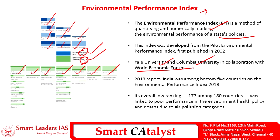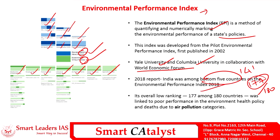Despite the Government of India undertaking various schemes to improve the status of the environment, the policies seem to be providing less relief to existing problems. Since the policies are ineffective, India's ranking has come down compared to 2016. In 2016, India's rank was 141, whereas in 2018 the rank is 177 out of 180 world countries assessed in the report — placing India among the bottom five countries.